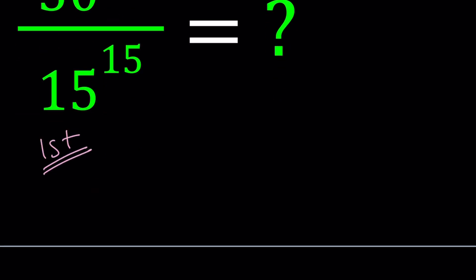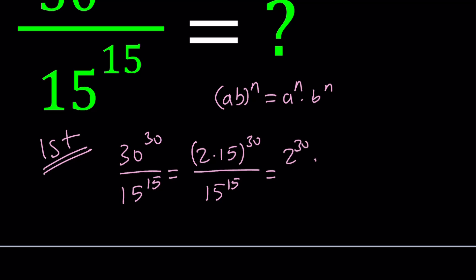So for my first method, to simplify this expression I'm going to use properties of exponents. If you have a, b to the power n, this can be broken down as a to the n times b to the n. So I'm going to break down the 30 as 2 times 15 first, and then distribute the power because they both have the power of 30. So we can write this as 2 to the power 30 times 15 to the power 30, that is divided by 15 to the power 15.